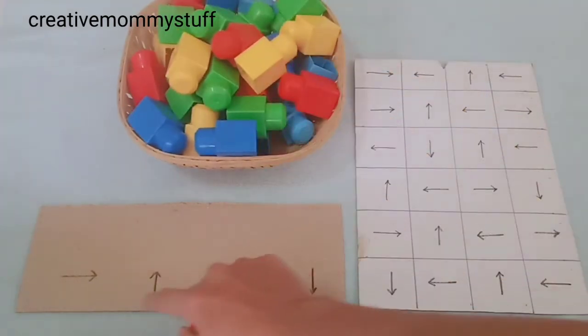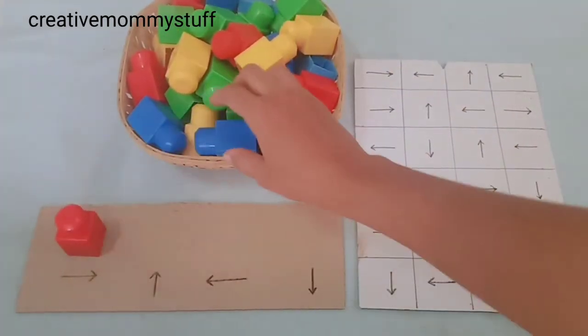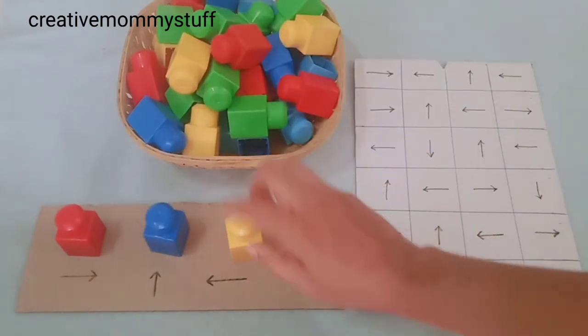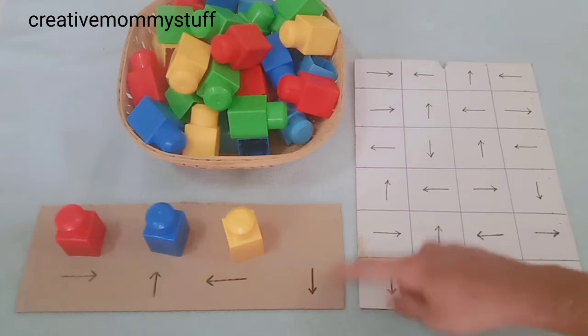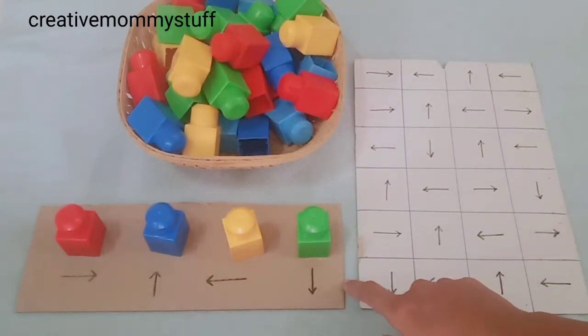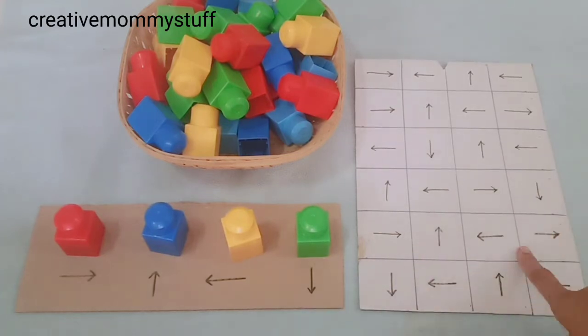For example, for right I will place the red color, for up blue color, for left yellow, and for down we will have green color. Now according to this color pattern, the kid has to fill this sheet.